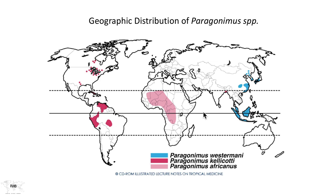For instance, if we're in Africa, particularly in West Africa, we would find Paragonimus africanus. However, if we were to locate to Southeast Asia, the dominant species there is Paragonimus westermani. And in the new world, Paragonimus calicati is the dominant species. But keep in mind that there are many different species of Paragonimus that could be included in this list.